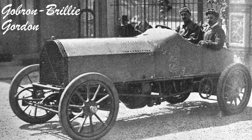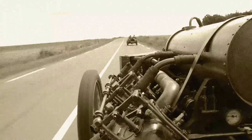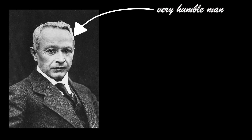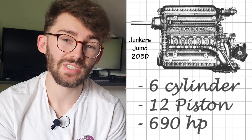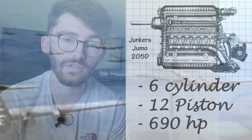Fast forward 20 years: a car powered by a 15 litre opposed piston engine became the first car to exceed 100 miles an hour, averaging a speed of 103.5 miles an hour over a one kilometer distance. The fact they measured speed in imperial units and distance in metric units pains me. Some of the most noteworthy opposed piston engines were a series known as Junkers Jumos, developed by another extremely humble man, Professor Hugo Junkers. The most well known of these was the Jumo 205, which was a six cylinder, 12 piston, 690 horsepower diesel engine.